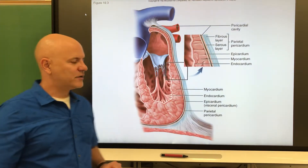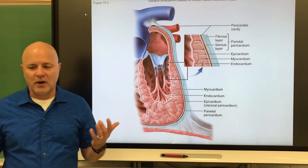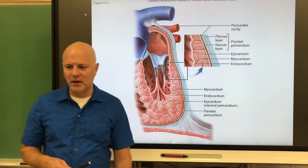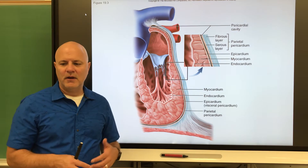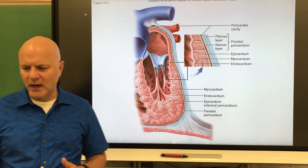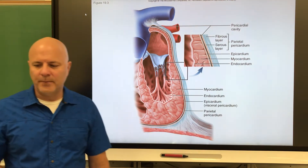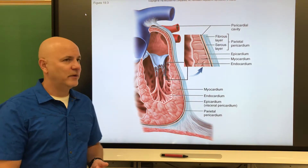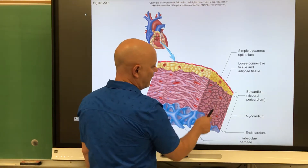Now let's look at the layers of the heart wall. The outer layer is the epicardium, also known as the visceral pericardium — they are the same thing. Next is the myocardium, the middle muscle layer of the heart, made of cardiac muscle tissue. Within that is a fibrous skeleton made of collagen and elastic fibers, which serves as an anchoring point for cardiac muscle cells. Lastly, the innermost layer is the endocardium, made of endothelium — essentially simple squamous epithelium — which is continuous with the arteries and veins.